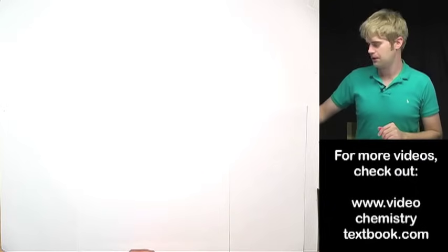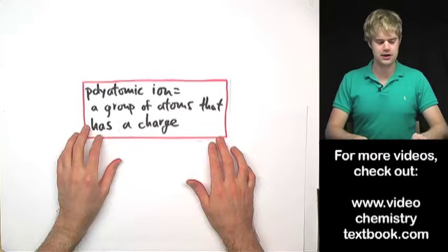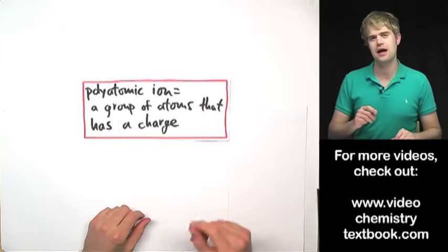So what's a polyatomic ion? Well, a polyatomic ion is a group of atoms that has a charge.